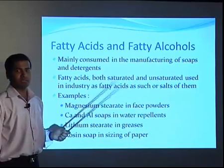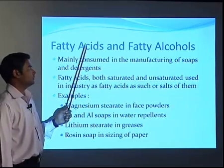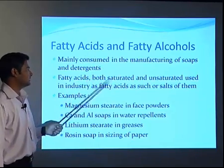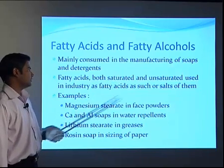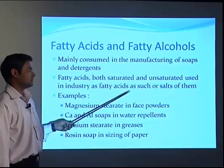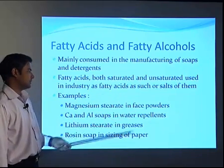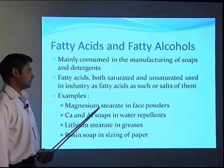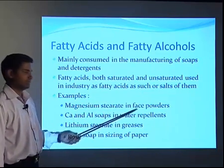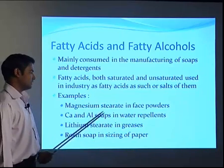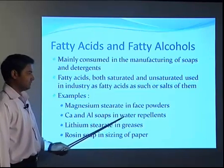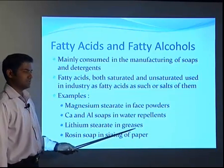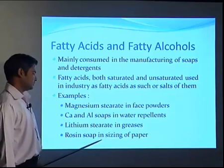The tail part of surfactants is made up of fatty acids and fatty alcohols, so it is necessary to understand how they are manufactured. They are mainly consumed in the manufacture of soap and detergents. Both saturated and unsaturated fatty acids are used in industry — for example, magnesium stearate is used in face powders (stearic acid reacted with magnesium hydroxide gives the salt), calcium and aluminum soaps are used as water repellents, and lithium stearate made from lithium hydroxide and stearic acid is used in grease manufacturing. Rosin soap is used for sizing of paper.